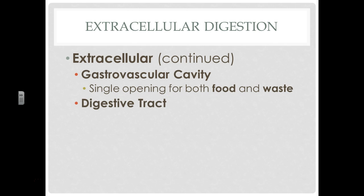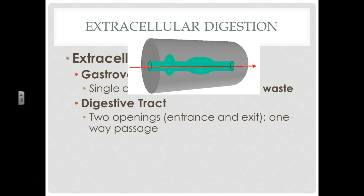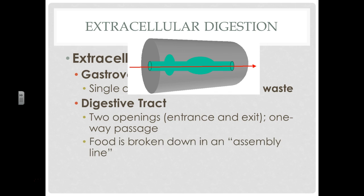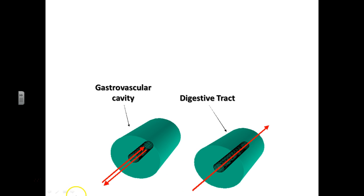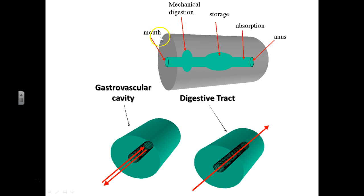We, thankfully, don't have that. We have a digestive tract. This is where we have two openings — an entrance and an exit. It's a one-way passage. Food is broken down kind of in an assembly line. When you take food in your mouth, your mouth and your saliva are going to break down the sugars, your stomach is going to break down the proteins, and your intestines are going to break down the fats. Each one of those is broken down separately. So, gastrovascular cavity: one way in, one way out. Digestive tract: separate entrance and exit. You've got a mouth, mechanical digestion where stuff is physically broken up, you store it, absorb it, and then anything left over — out the anus.